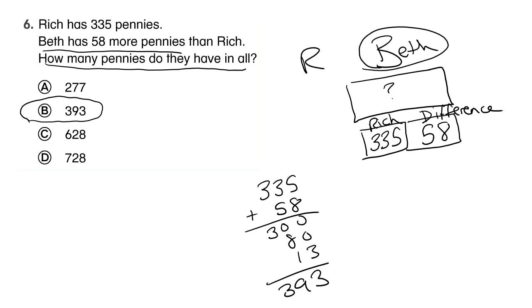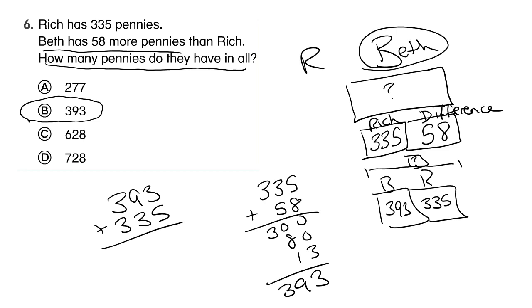So to find out how many they have together, we've got Beth, we've got Rich, and we want to know what all of it is together. We have 393 for Beth and 335 for Rich. We have to add those together. So 393 plus 335. 300 plus 300 is 600, 90 plus 30 is 120, 5 plus 3 is 8.